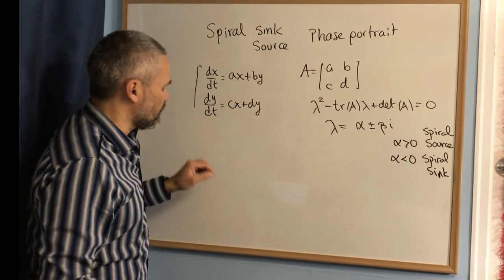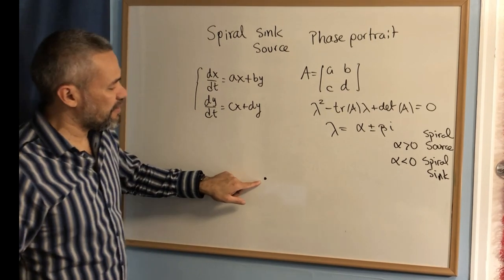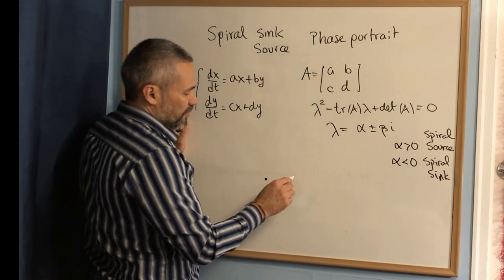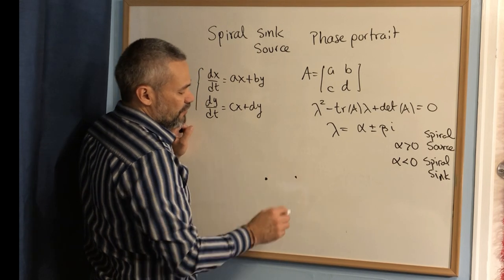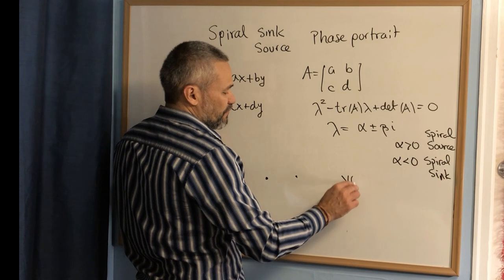The way to do it is you draw the orbit, which is the equilibrium point, and then you pick another point. For this point, you have to first find the vector field of the system,